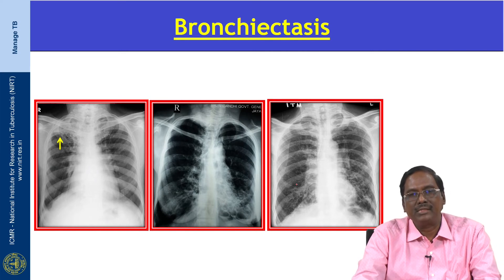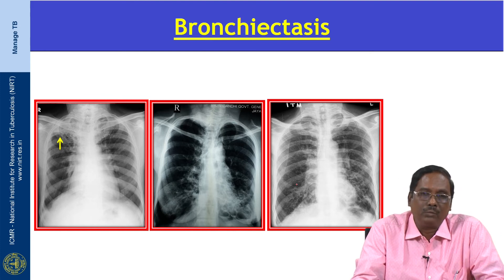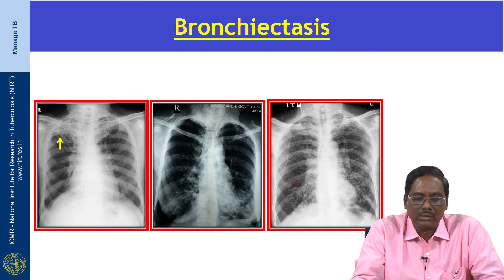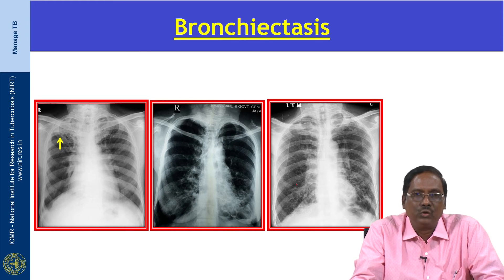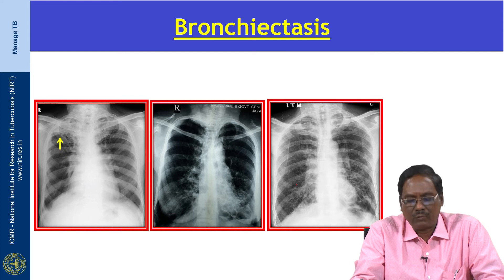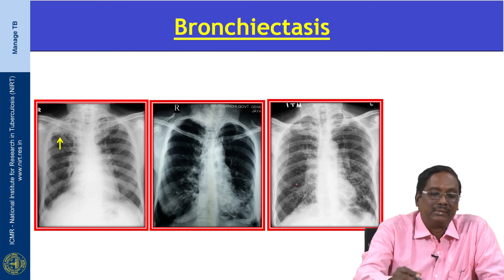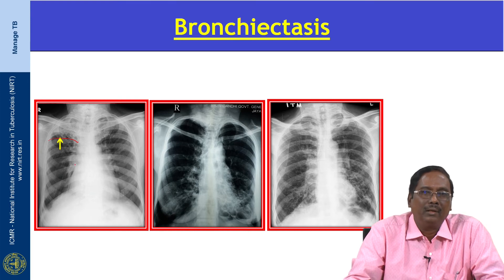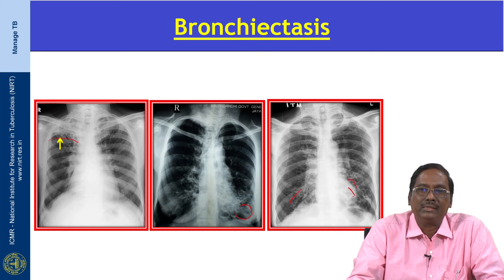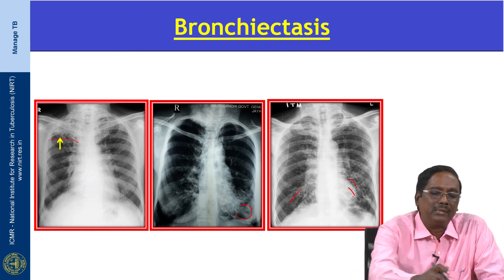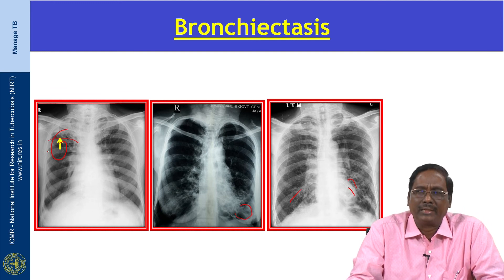Bronchiectasis is an accepted universal sequelae of tuberculosis, seen in both primary and post-primary tuberculosis. It is seen in 71 to 86 percent of patients with inactive disease and in about 30 percent with active disease. Bronchiectasis in TB is due to tuberculous bronchitis or fibrosis with traction bronchiectasis. Upper lobe bronchiectasis is usually seen in pulmonary tuberculosis, while lower lobe cystic and cylindrical bronchiectasis are typically seen in primary TB.